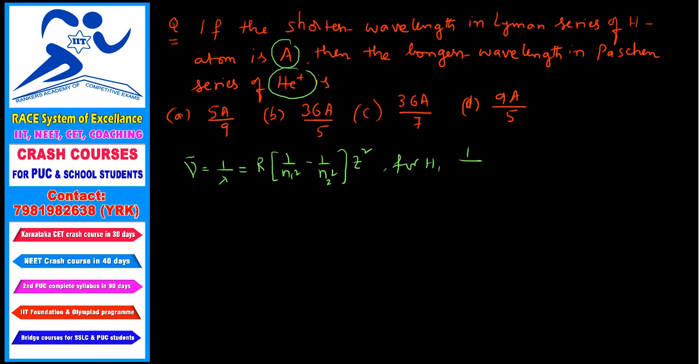So it will be 1 by A equals R into shortest wavelength where N2 is infinite. So 1 by 1 square minus 1 by infinite square, that equals to R value. So what is R value? R value equals 1 by A. So A equals 1 by R. So R equals 1 by A.